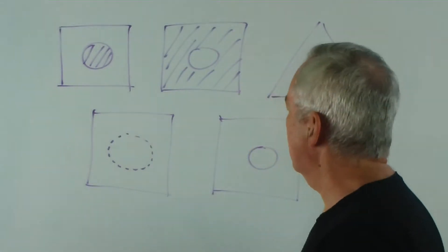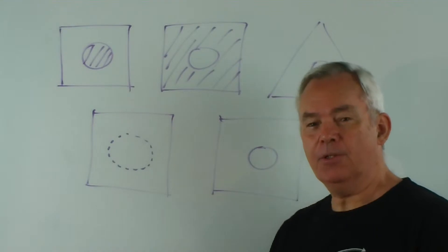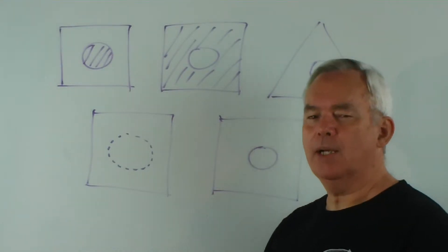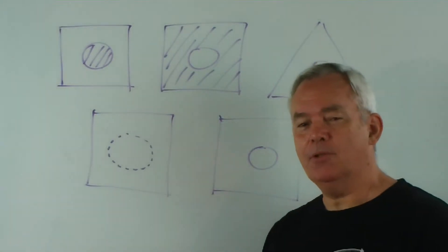The question is this. Which one of these five shapes is most different? Or you could ask, which one is the odd one out? Now they're all different and that's what makes this difficult.